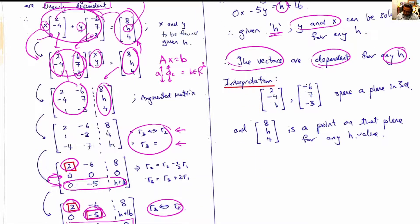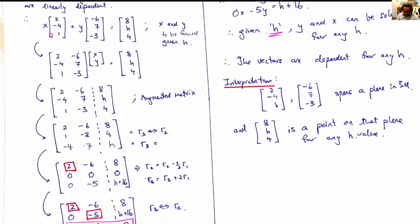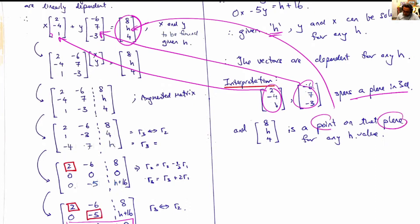What does this mean? We're given the first vector and the second vector, and these vectors span a plane. Two vectors in R3 span a plane in three dimensions. This third vector, for any h, is on that plane. It is a point on that plane for the given h. That is why these three vectors are linearly dependent. The first two vectors can be used to find the third vector regardless of h.